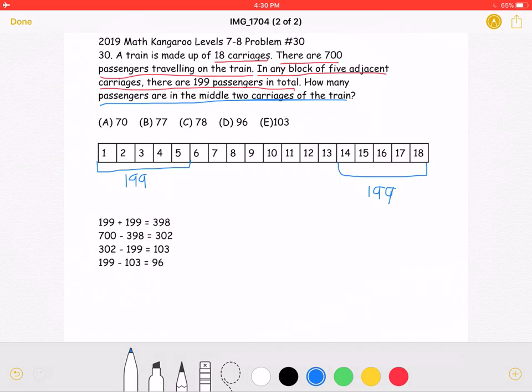And there are these 8 remaining in the middle. So, so far, we have 199 plus 199, or a total of 398 passengers accounted for. 700, which is the total number of passengers, minus 398 is 302. So these middle 8 carriages account for 302 people.